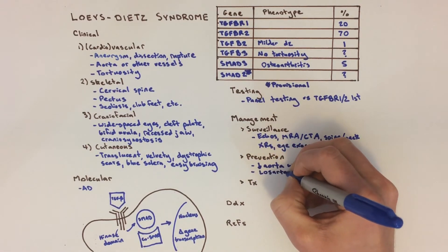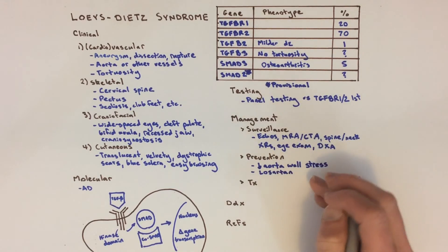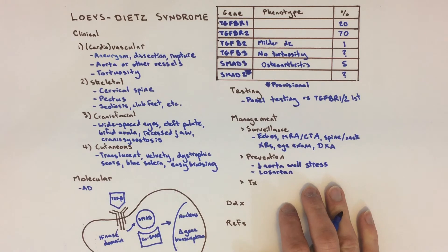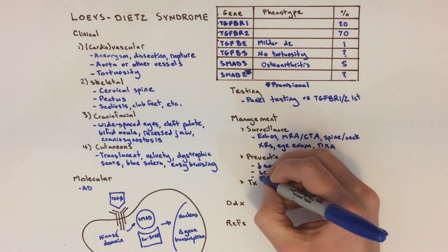In laboratory experiments, losartan keeps the aortas of Loeys-Dietz mice from enlarging. Although there hasn't been a clinical trial yet to guide dosing in humans with Loeys-Dietz syndrome, the medicine is routinely prescribed to these patients.